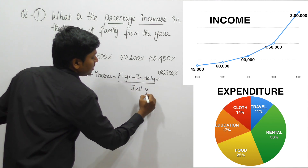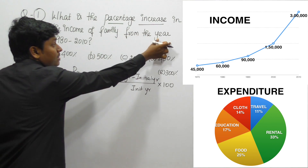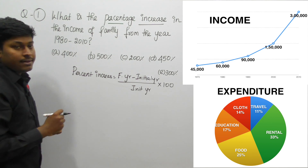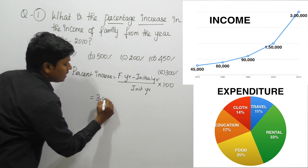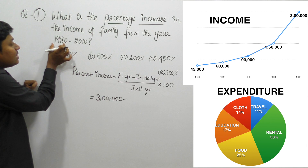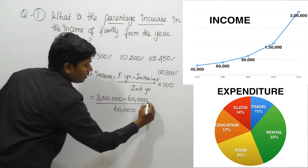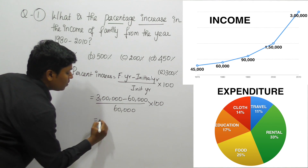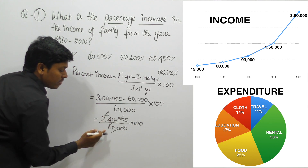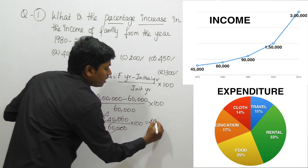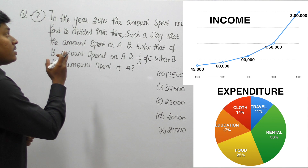The formula for percentage increase is: (final year minus initial year) divided by initial year, into 100. The initial year is 1980 and the final year is 2010. Income in 2010 is 3 lakh, and income in 1980 is 60,000. So: (3,00,000 − 60,000) / 60,000 × 100 = 2,40,000 / 60,000 × 100 = 4 × 100 = 400%. So the answer is 400%, which is option A.